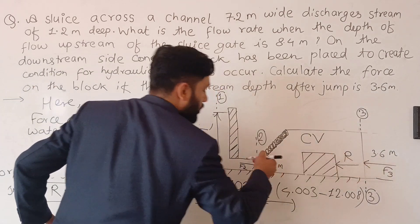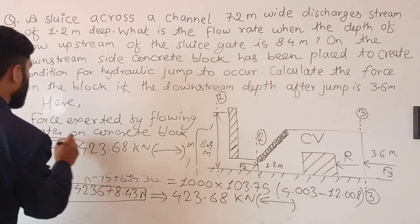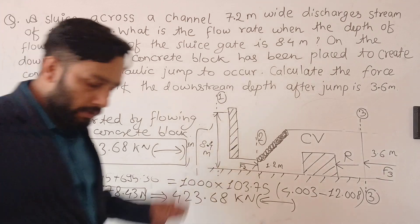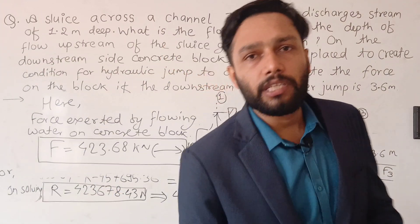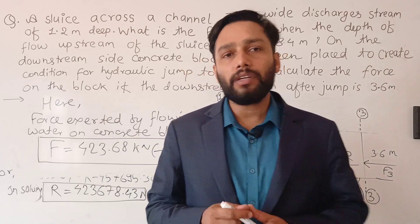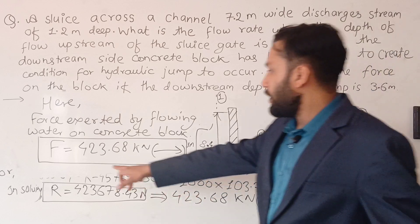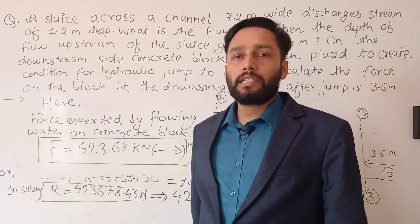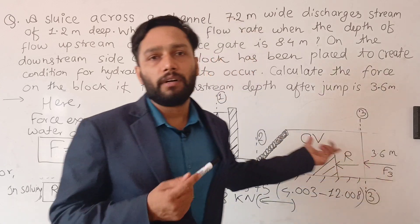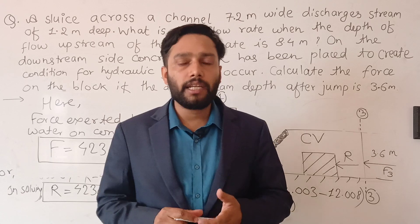This is our final required value — the force exerted on the concrete block. We applied the energy equation to find the discharge and then applied the momentum equation with a control volume between sections 2 and 3 to find the force exerted by water on the concrete block. For this type of important conceptual question, keep in touch with me — subscribe to my channel. See you in the next video, thank you.